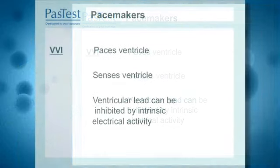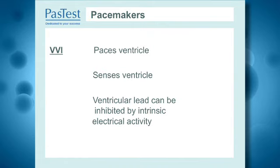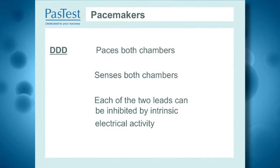To summarise: a VVI pacemaker paces the ventricle, senses the ventricle, and the ventricular lead can be inhibited by intrinsic electrical activity. A DDD pacemaker — another you'd frequently see written in the notes — paces both chambers (atrium and right ventricle), senses both chambers (right ventricle and right atrium), and has inhibitory function for both. If it detects intrinsic atrial activity it doesn't pace the atrium; if it detects intrinsic ventricular activity it doesn't pace the ventricle, thereby facilitating normal electrical conduction.